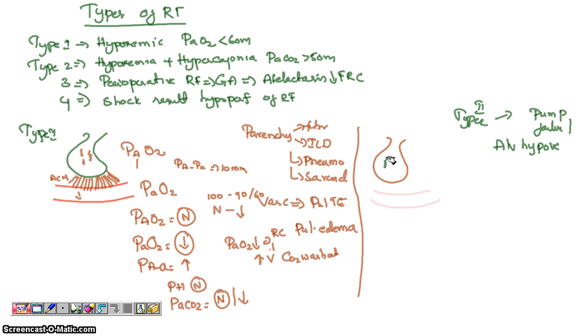See, the amount of oxygen reaching the alveoli itself is low. So definitely when the oxygen in the alveoli itself is low, definitely the oxygen within the artery also will be low.